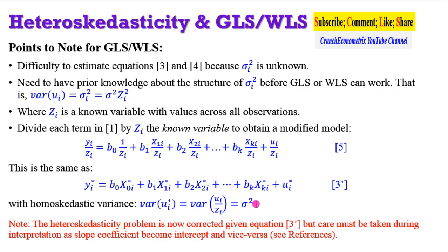So the GLS and WLS approaches correct for heteroskedasticity. But care must be taken during interpretation. This is because the slope coefficients of the variable that is used as the weights will now become the intercept of the model. And the prior intercept of that model now becomes a slope coefficient. For more on how you are going to interpret your GLS results, I will refer you to the references I have listed at the end of the screen. That is outside the scope of this tutorial. So if you are ready, please load your data and let's get started.